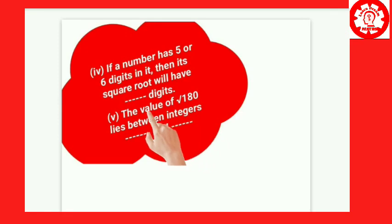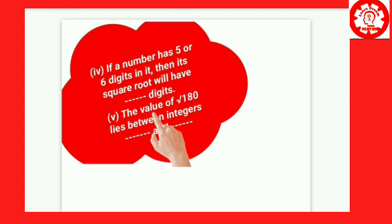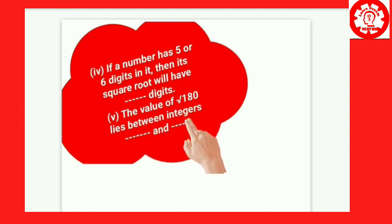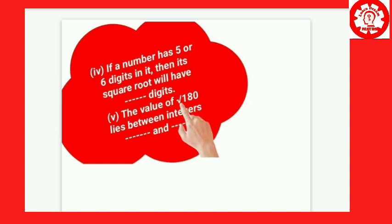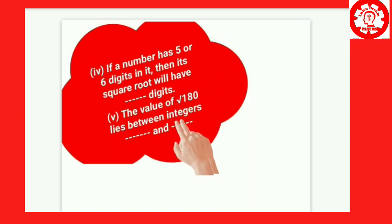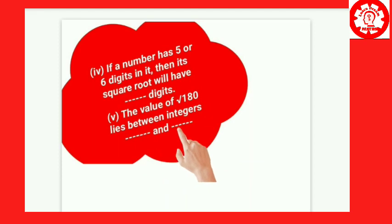Exercise 1.400, Fill in the blanks. We will now look at question 5.1: the square root of 180 lies between integers dash and dash. We need to find the two integers that the root value of square root of 180 lies between.